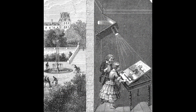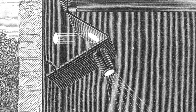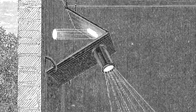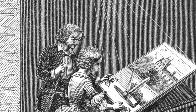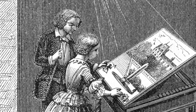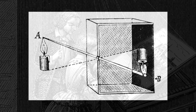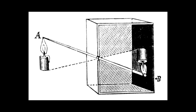Later improvements of the camera obscura included putting a lens in the hole so that the light could be focused, giving a brighter and more focused image projected on the wall. For photography, the camera is essentially a box, and the early experimenters with photography all knew that they wanted to make images in that box.